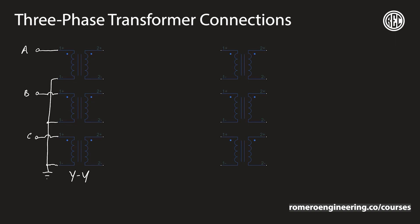For a YY connection, we then connect the secondary in a Y configuration as well. All the neutrals are connected together, and likewise we have the connections for the A phase, B phase, and C phase on the secondary side. I'm using lowercase letters to delineate that that's the secondary side.